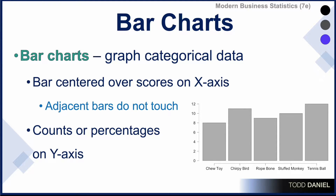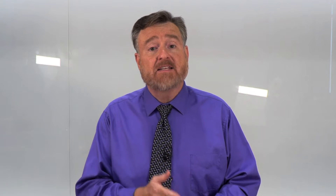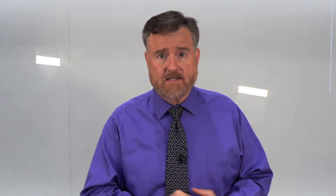If it was a histogram, the bars would touch. The disconnected nature of the bars tells us that these categories are disconnected from each other, which also allows us to improve upon our bar chart by using a Pareto option.